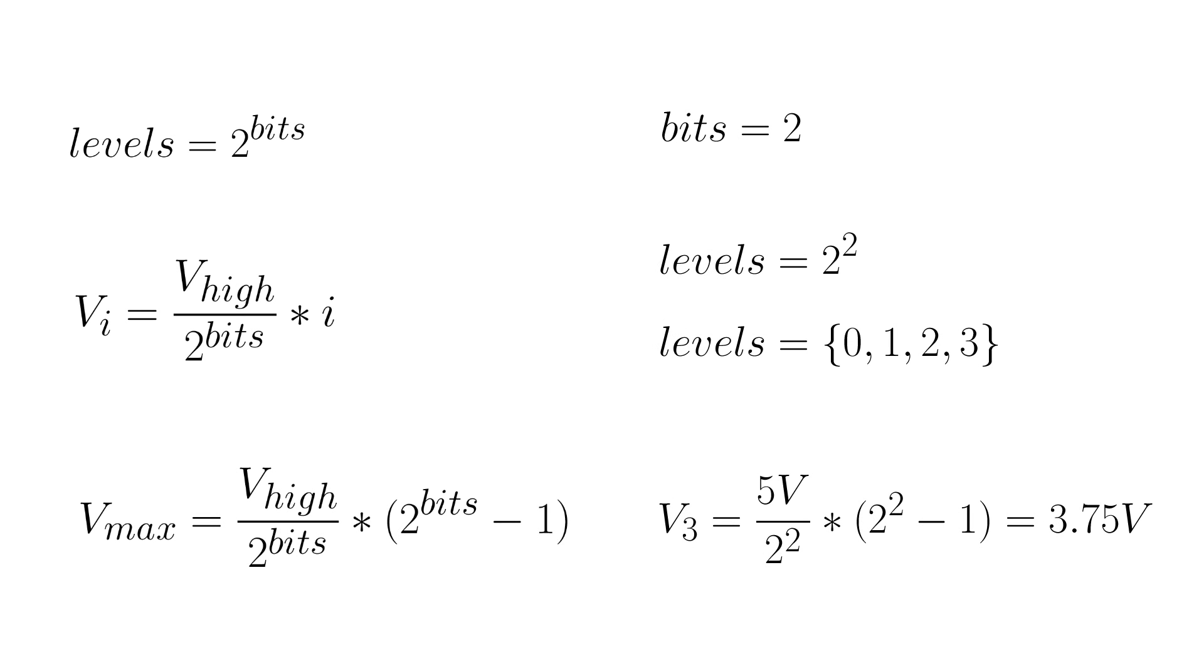It does look a bit complicated, so let's just try with this example of two bits. 2 to the power of 2 equals 4. So we have four levels, starting at zero, it's zero up to three. And then calculating the maximum voltage, we get exactly 3.75 volts. But no worries, the more bits you take, the closer you get to your 5 volts.